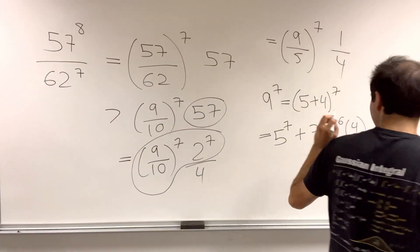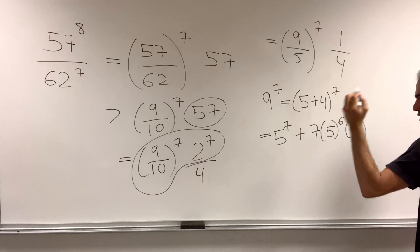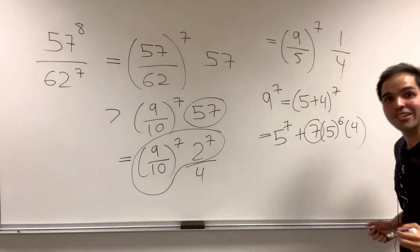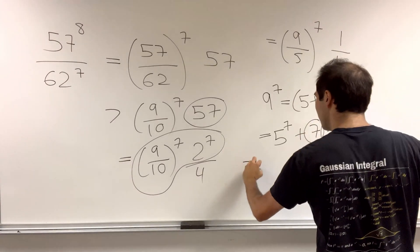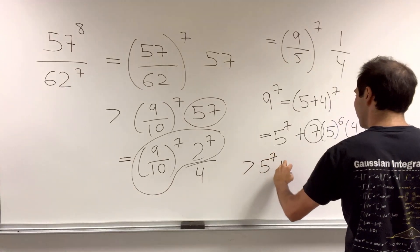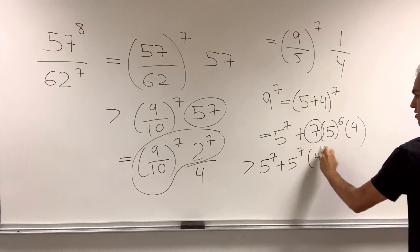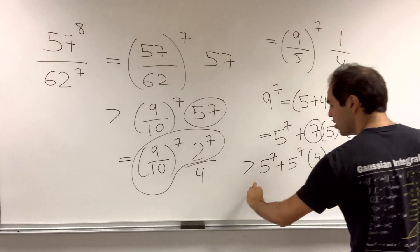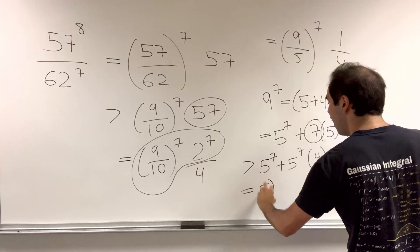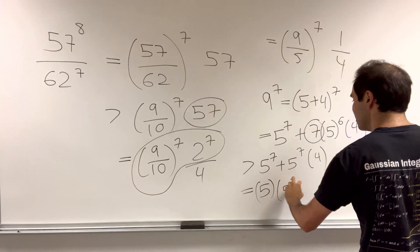But now, the thing that saves the day is the fact that 7 is bigger than 5. So this becomes bigger than 5 to the 7th plus 5 times 5 to the 6th. So 5 to the 7th times 4, and this is the same thing as 5 times 5 to the 7th.